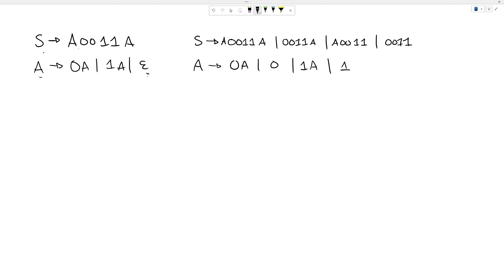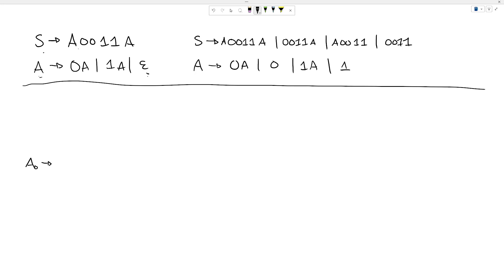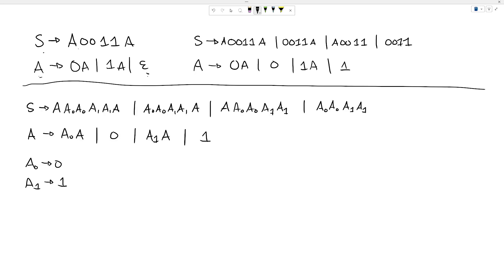Next are unit rules. A quick check: are there any unit rules? There are none — the only possibilities would be A goes to A or S goes to A, and we don't see S goes to A, so we skip that step. Now we just need to get everything in the right form. Many strings are mixed — they have both variables and terminals. So I'll make new variables: A₀ goes to 0 and A₁ goes to 1, and replace all terminal occurrences in the rules above with A₀ or A₁.